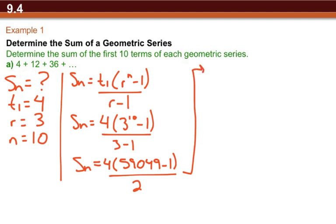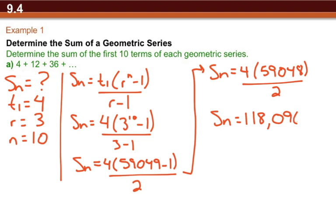Next step, we can do 59,049 minus 1. 59,048 we get. And to finish this off, we can do this all in one step on the calculator. We get 118,096.